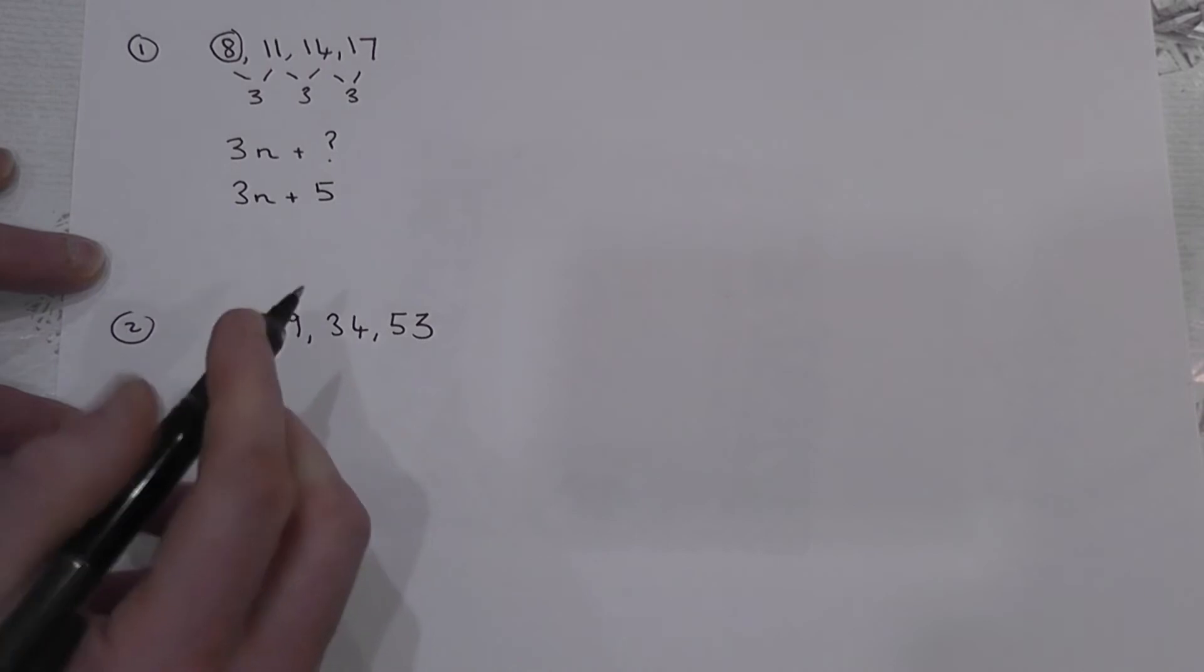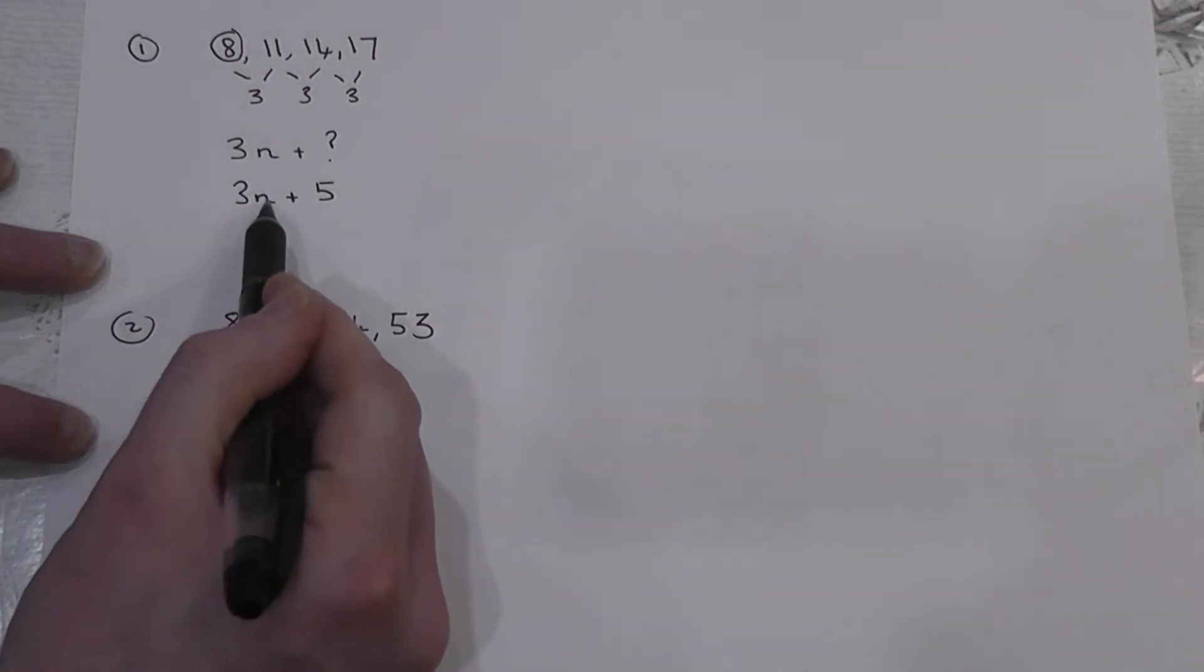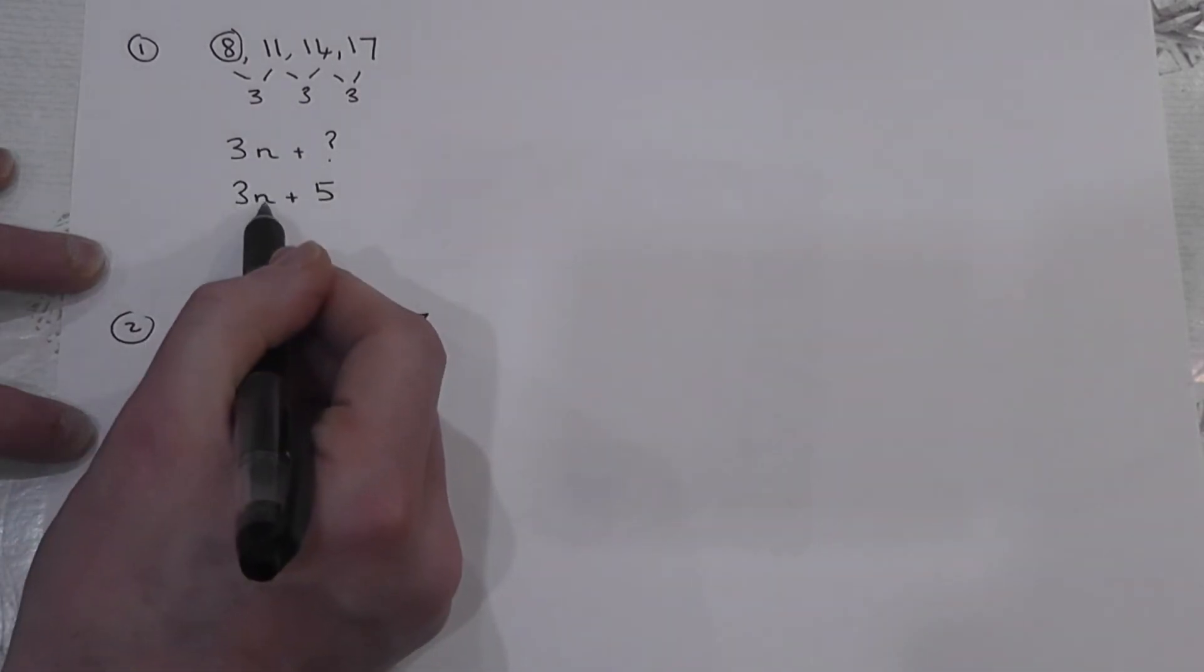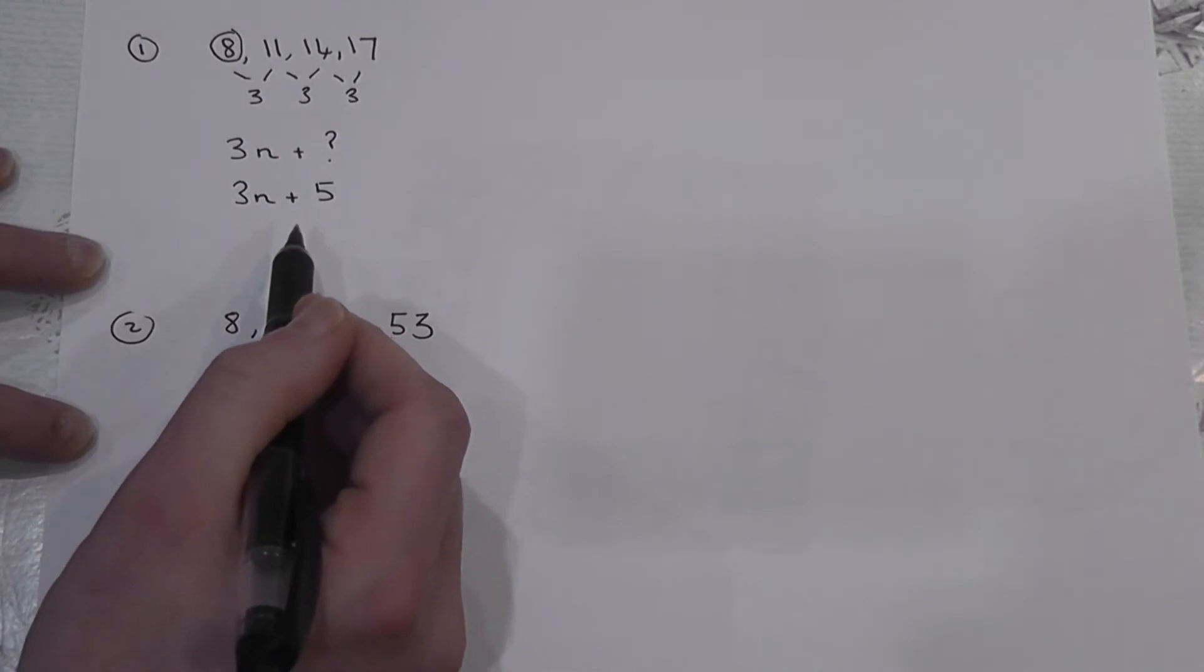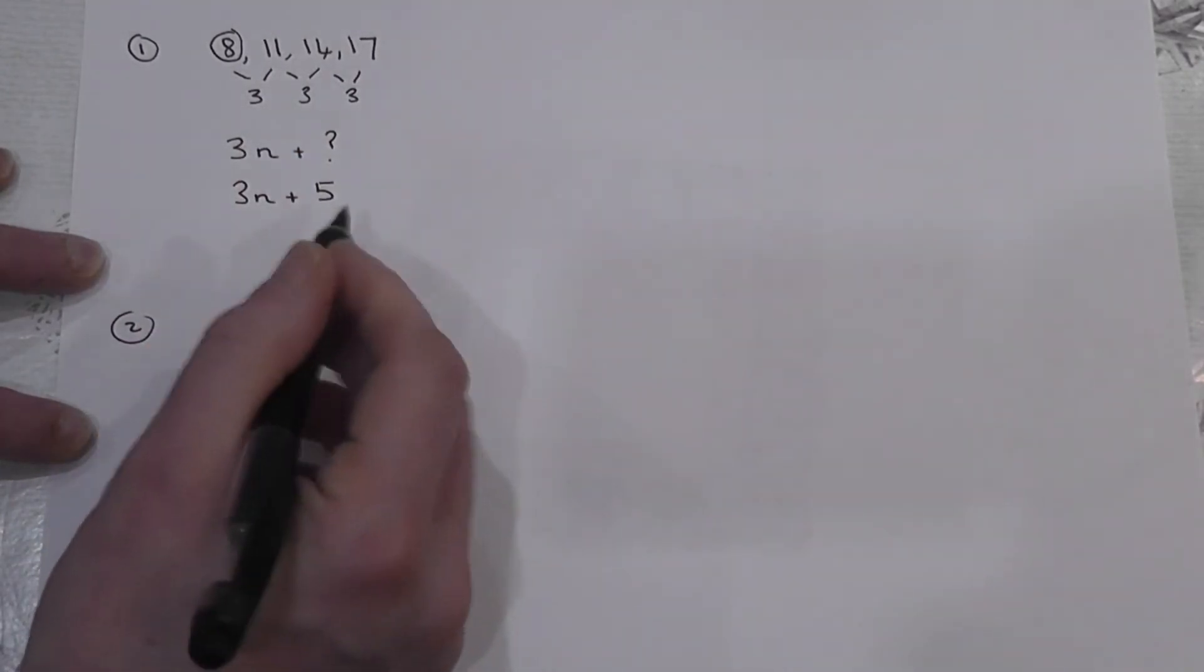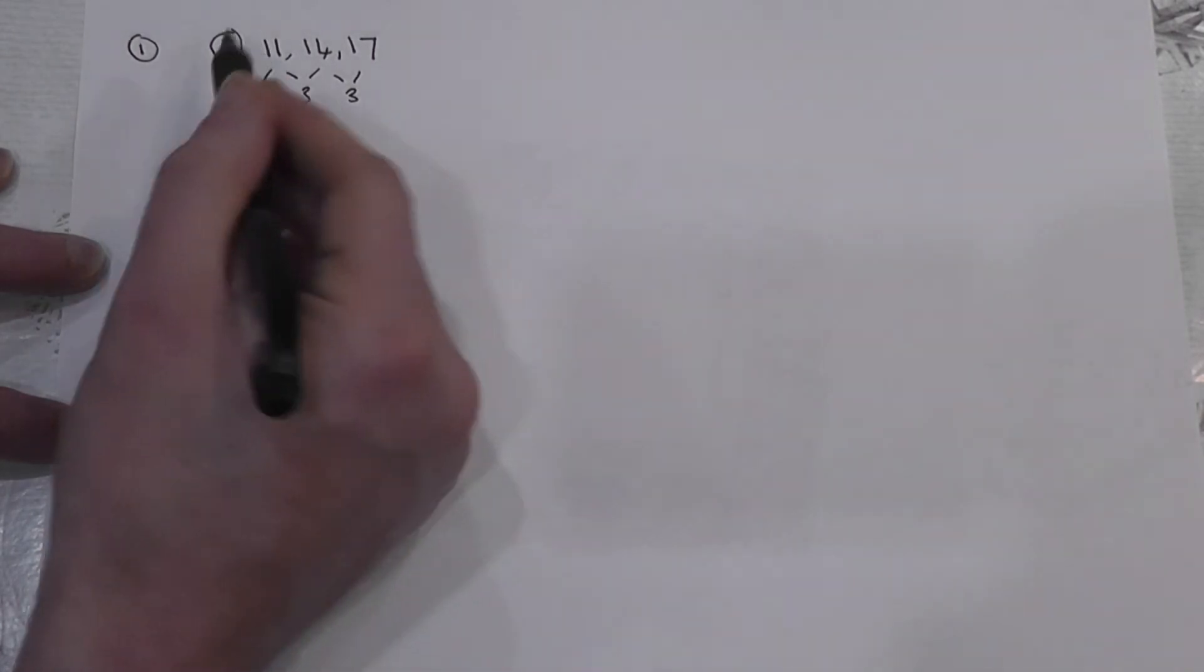This works because when n is 1, 3 times 1 is 3, plus 5 is 8. When n is 2, 3 times 2 is 6, plus 5 is 11. When n is 3, 3 times 3 is 9, plus 5 is 14. So this is the formula, the nth term for this sequence.